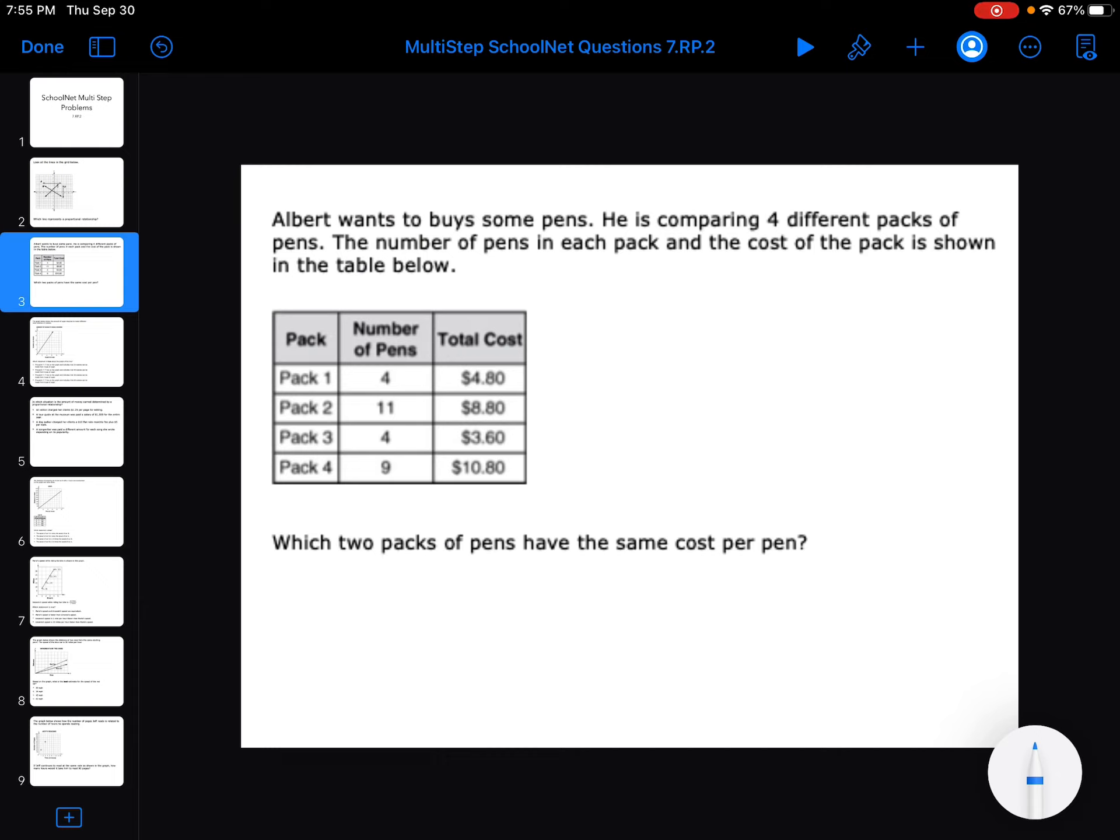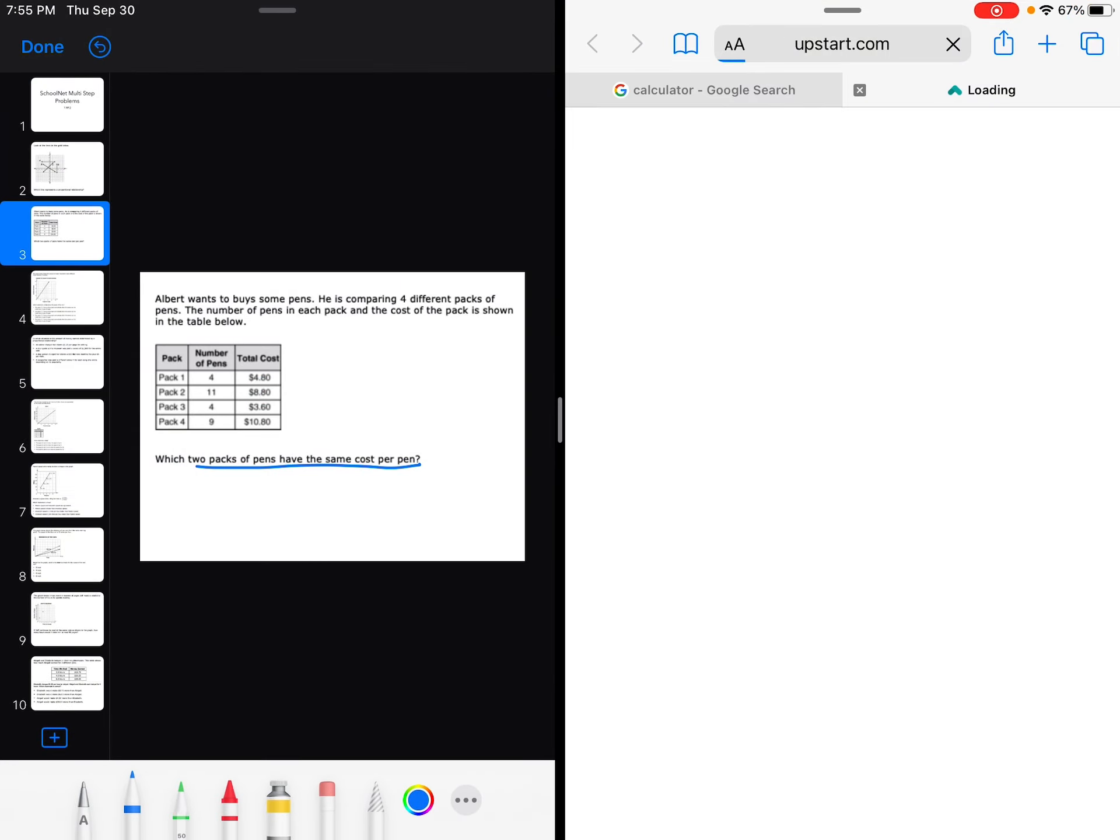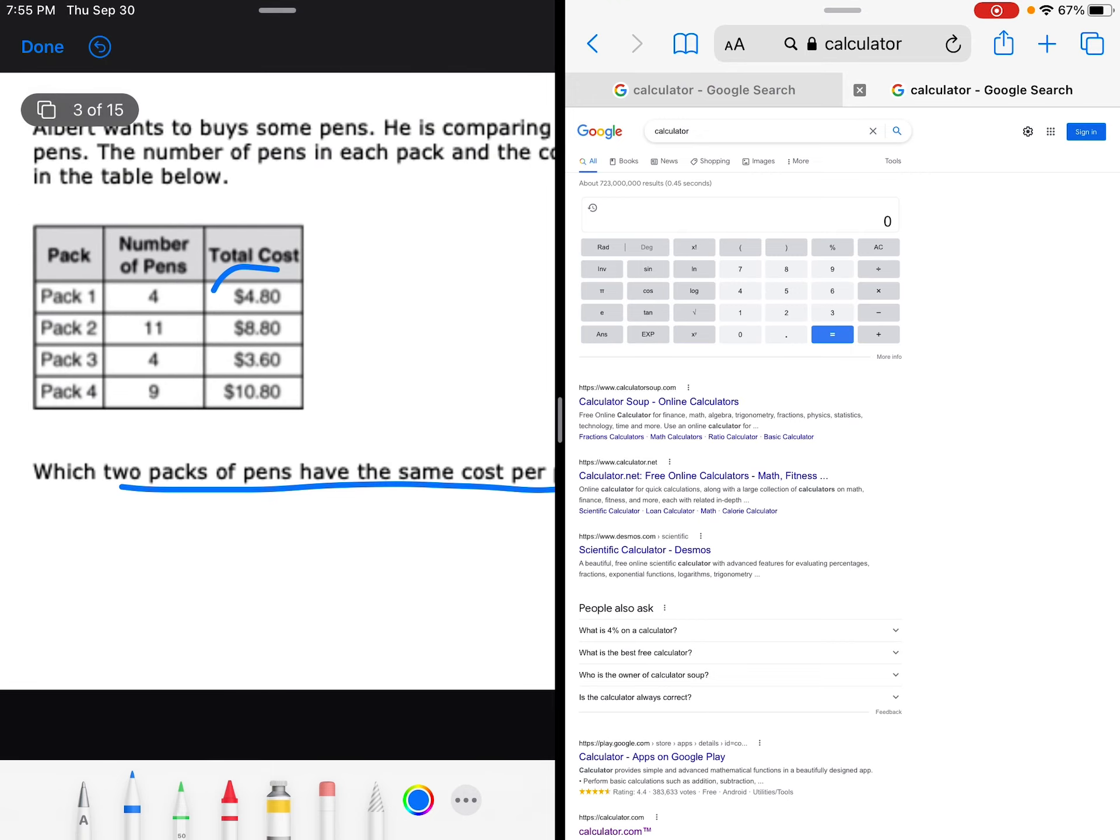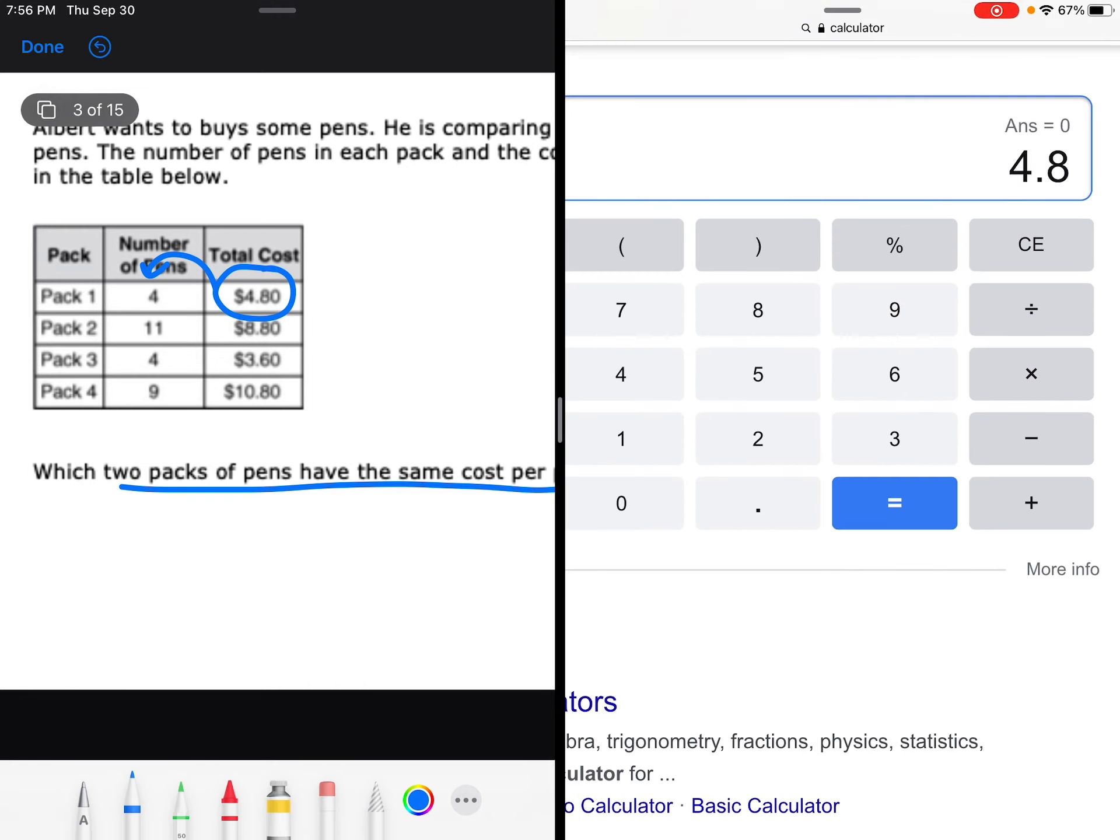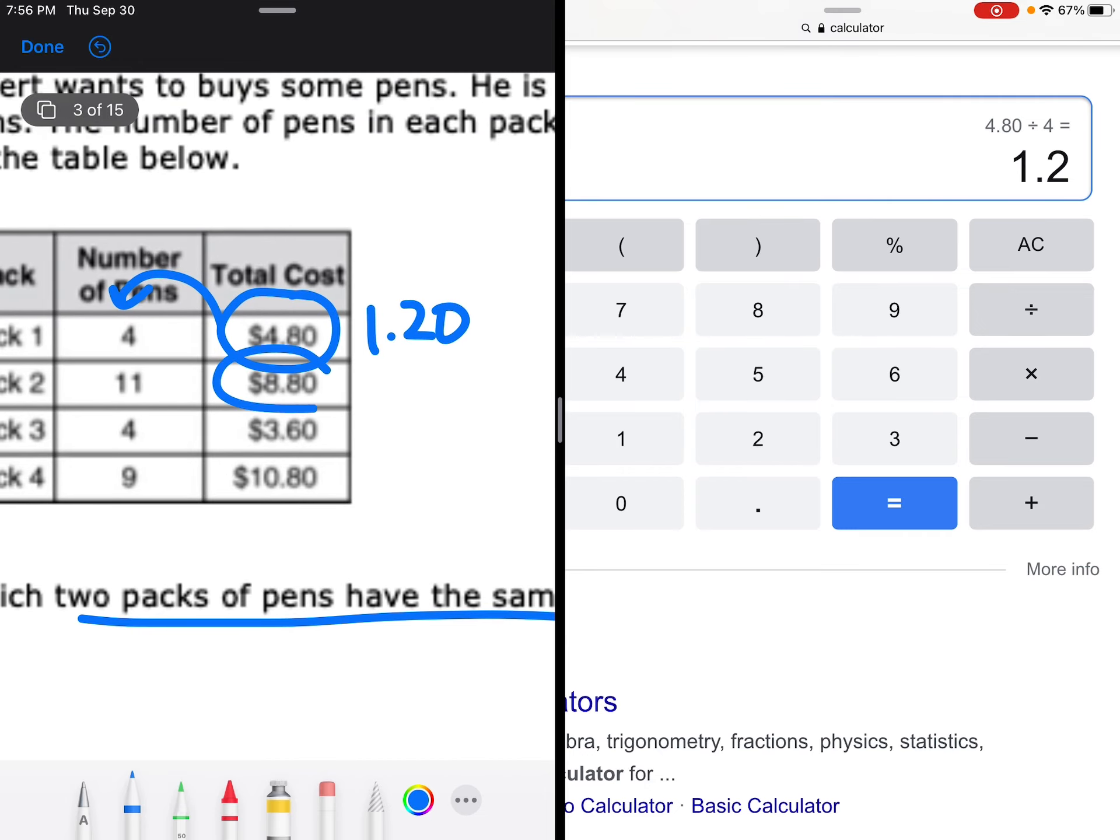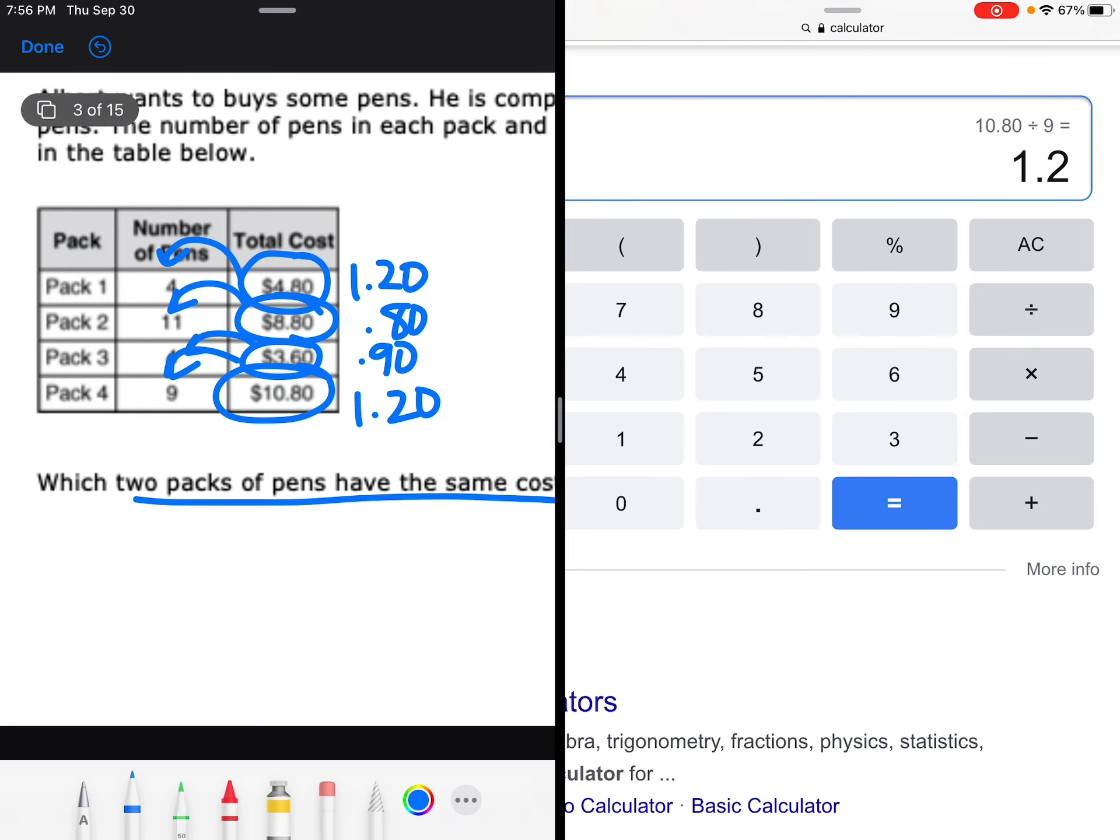Albert wants to buy some pens. He's comparing four different packs of pens. The number of pens in each pack and the cost of the pack is shown in the table below. Which two packs have the same cost per pen? So that means for one pen. I'm going to open up my calculator. Remember, you're dividing. So you're taking your cost and you're dividing it by the pens. $4.80 divided by 4 is $1.20 per pen. $8.80 divided by 11 is $0.80 per pen. $3.60 divided by 4 is $0.90 per pen. $10.80 divided by 9 is $1.20. So it would be pack 1 and pack 4.